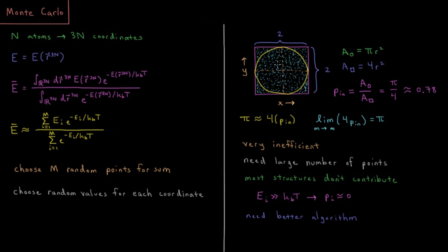So the reason naive Monte Carlo doesn't work too well for molecular simulations is this fact that we want low energy structures. If the energy is much, much greater than kT, then the probability is going to zero. They don't contribute. So what we need is a better algorithm which is biased towards low energy structures.